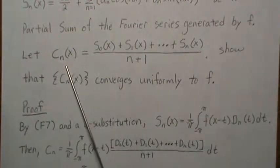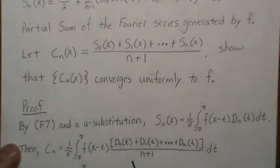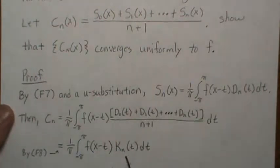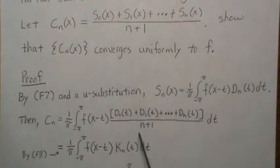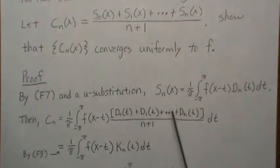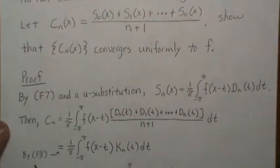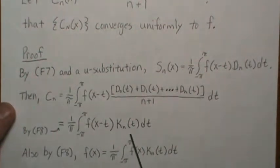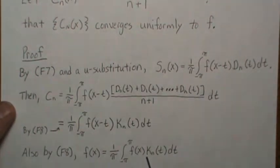By F8, where we looked at the Fejér kernel, that sum of Dirichlet kernels divided by n+1 is what we represented as Kn(t). So this Cesàro sum involves the Fejér kernel. Also by F8, we showed that the integral of the Fejér kernel equals one.